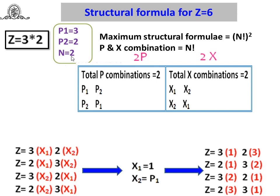The number of stages here is 2. Now, how to find the maximum number of structural formulae for z equal to 6? The standard equation is n factorial bracket squared — that means you can obtain maximum structural formulae equal to n factorial bracket squared. Remember these things. Here p1 equals 3 and p2 equals 2, the number of speed steps in stage 1 and stage 2 respectively.